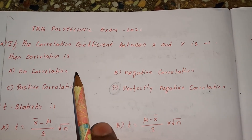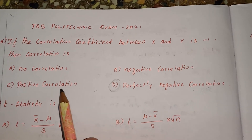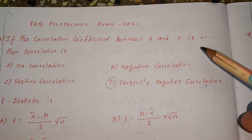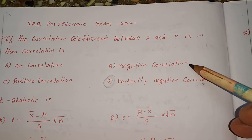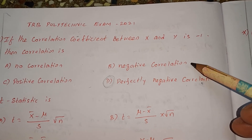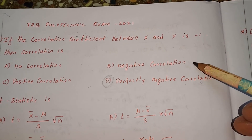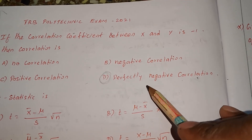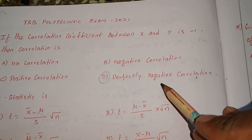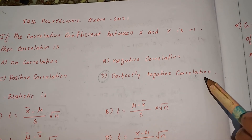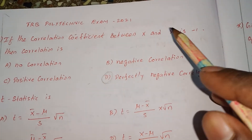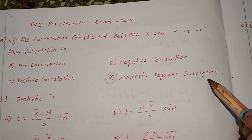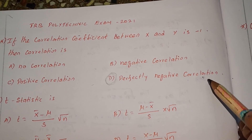No correlation corresponds to r equal to 0. Positive correlation corresponds to a positive value of r. Negative correlation corresponds to negative values of r, and r equal to minus 1 is specifically perfectly negative correlation. So the answer is option D — perfectly negative correlation. Thank you.